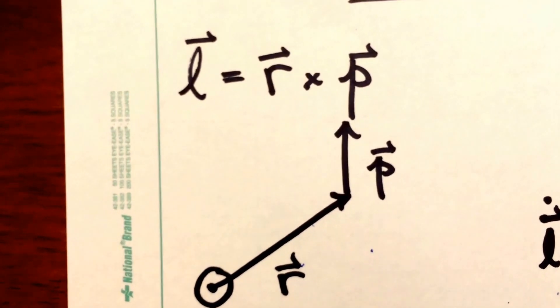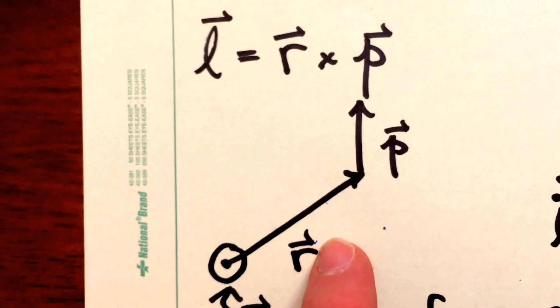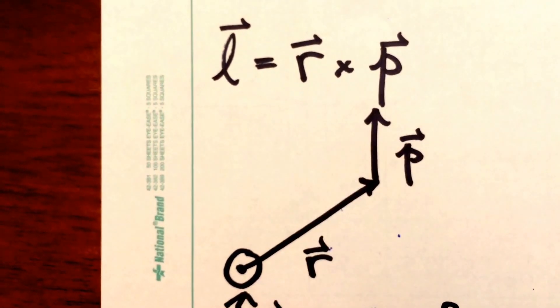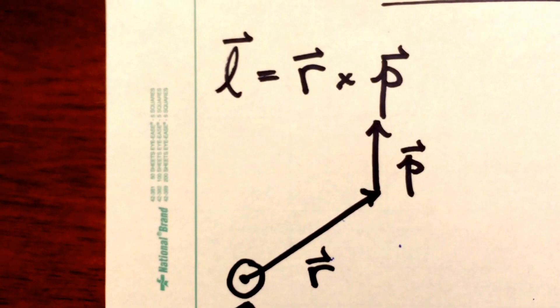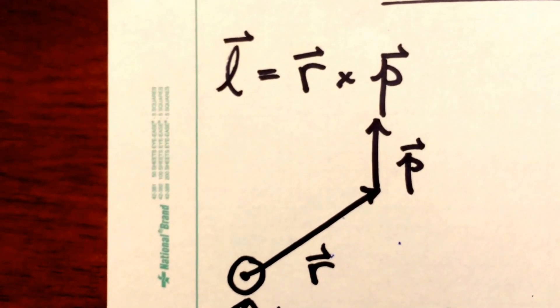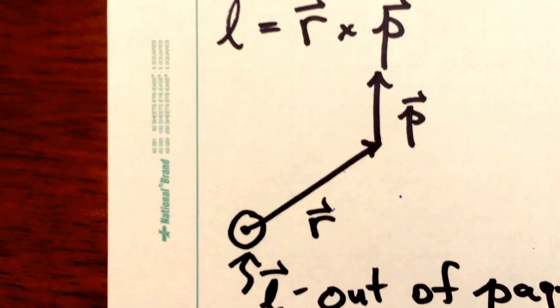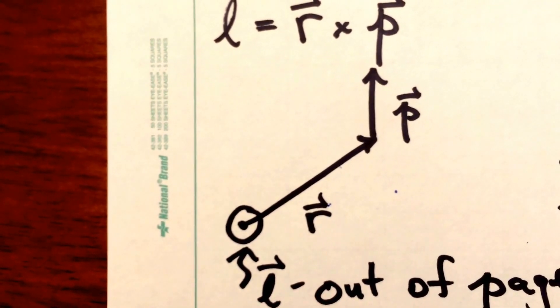And so for a single particle, we have a position vector here, r. Here's our momentum vector for that single particle there. When we cross r into p, we can apply the right-hand rule. And what we find in this case is that the angular momentum vector l points directly out of the page toward the camera.